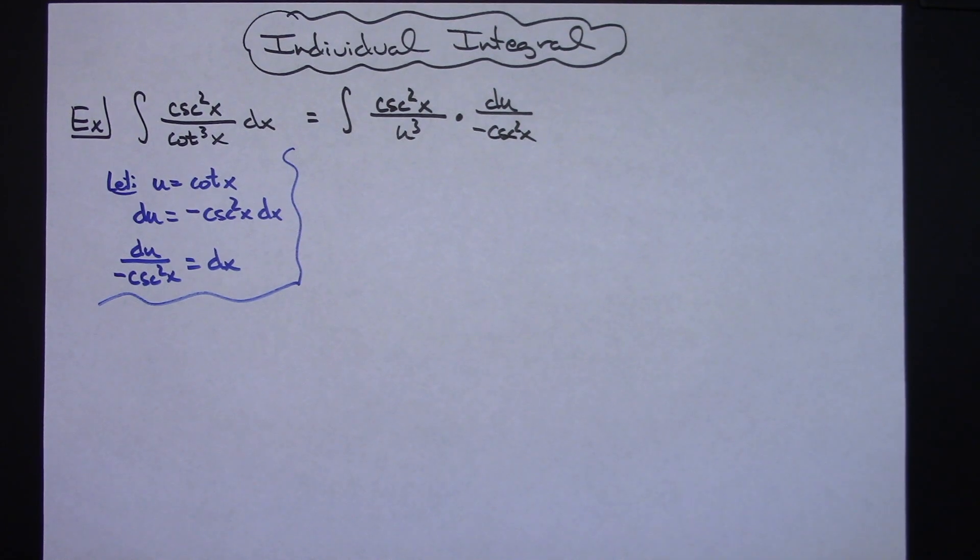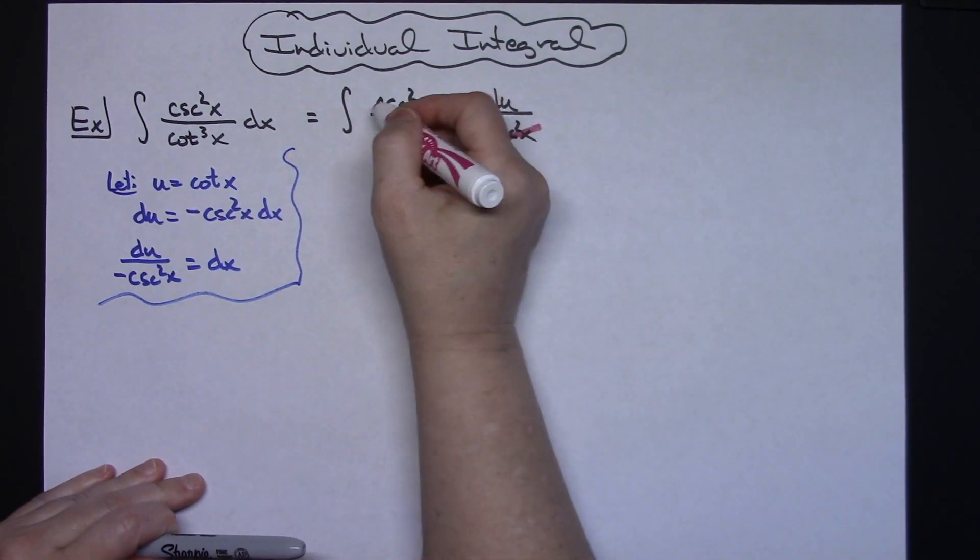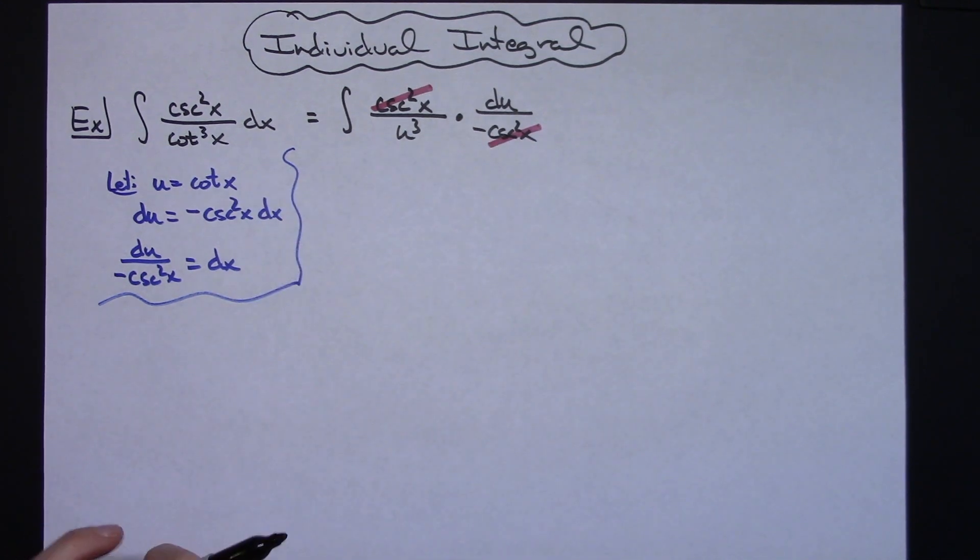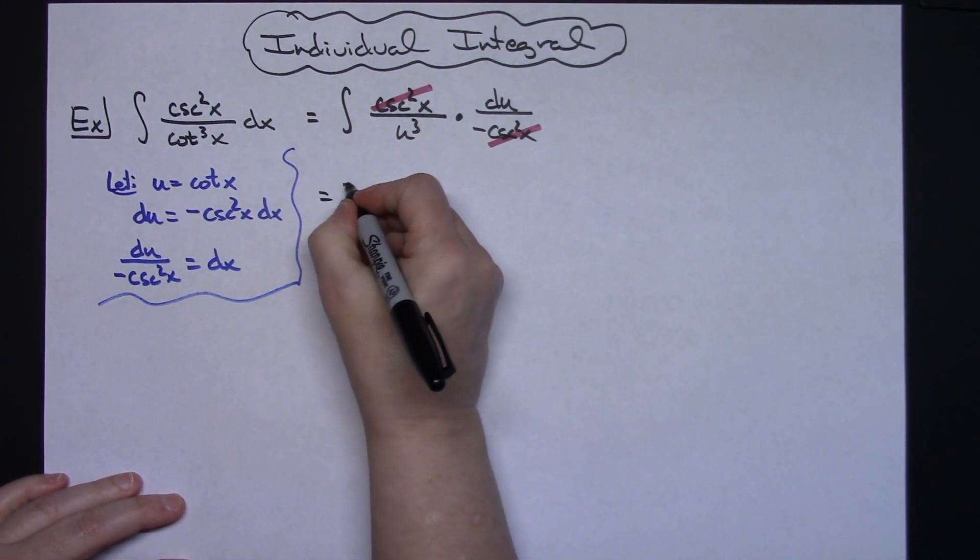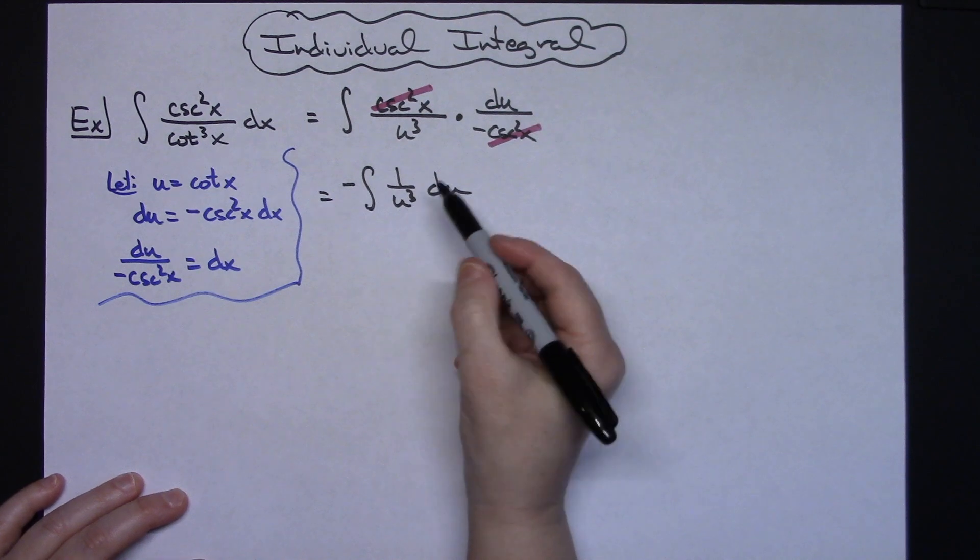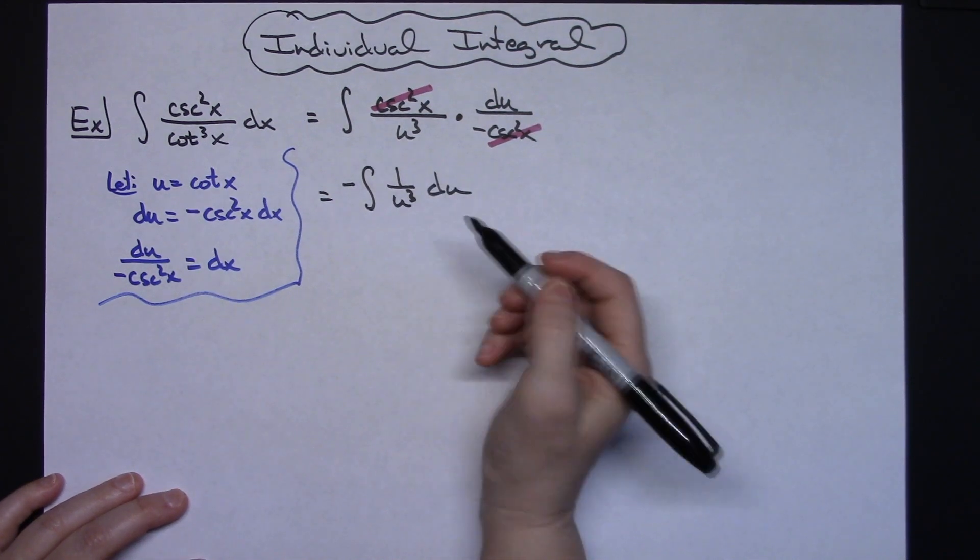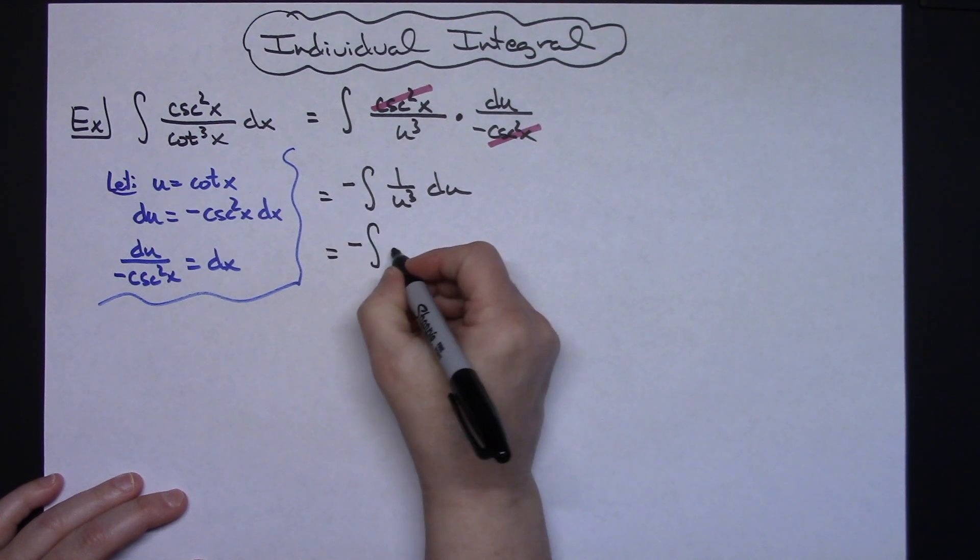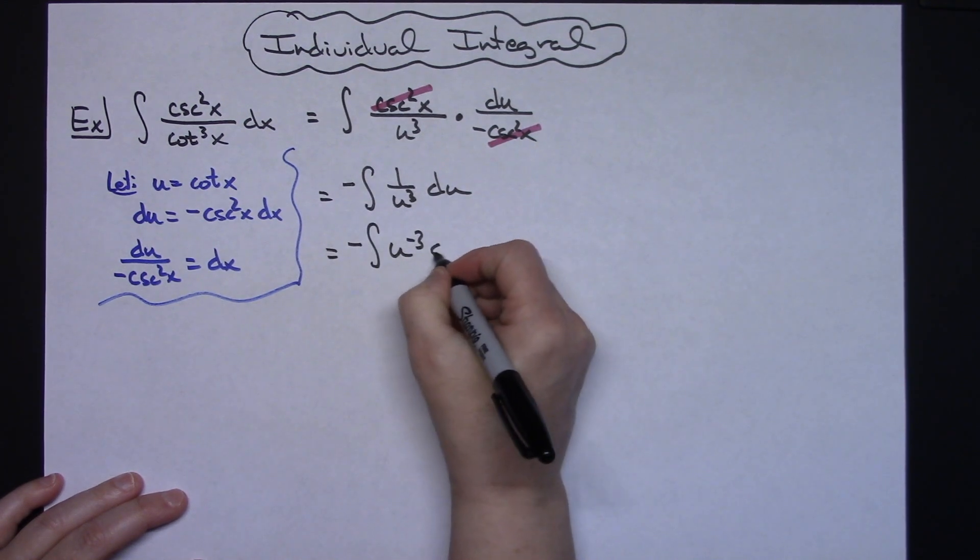That's going to allow us then to cross out those cosecant squared of x's. I'm also going to take that negative and pull it out in front. So then I'll have a negative the integral of 1 over u to the third du. That will integrate really simply by moving that up to the top and making it a negative 3. So I'll have negative the integral of u to the negative third du.